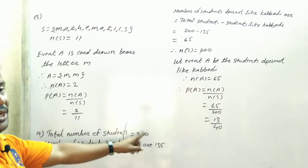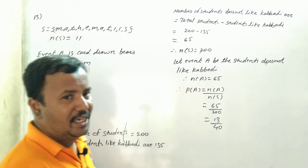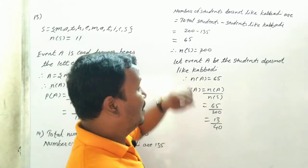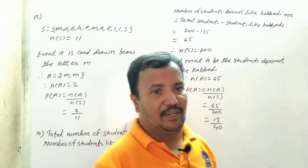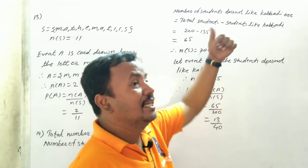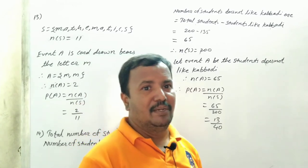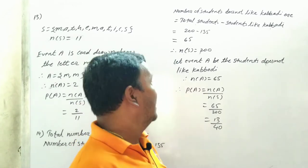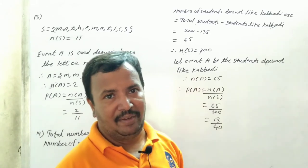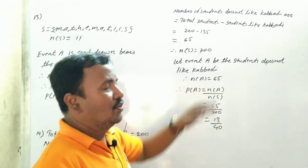The number of students who do not like kabaddi, right? So total number of students how many are there? 200. Number of students like kabaddi are 135. So number of students does not like kabaddi, how to find?